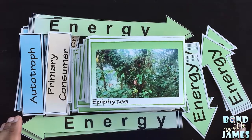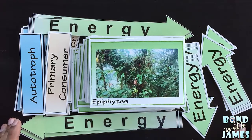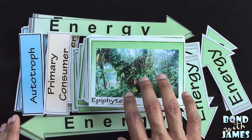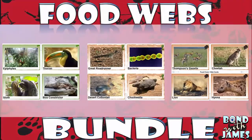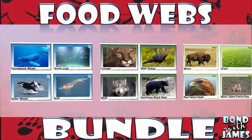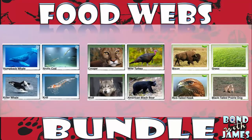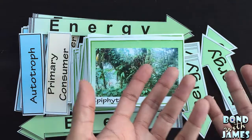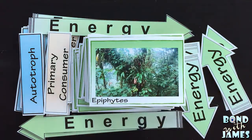This is James of Bond with James and this is the Food Chain and Food Web Card Sort Activity. This one is specifically the rainforest version; however, there is a desert version, a savannah version, an arctic version, a temperate forest version, and a temperate grassland version. I've also bundled all those together to offer as a single bundled product.